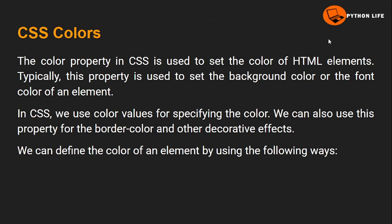Welcome to Python Life YouTube channel. Here we are going to discuss the topic CSS colors. The color property in CSS is used to set the color of HTML elements. Typically, the property is used to set the background color or the font color of an element. In CSS, we use color values for specifying the color, and we can also use this property for the border color and other decorative effects.